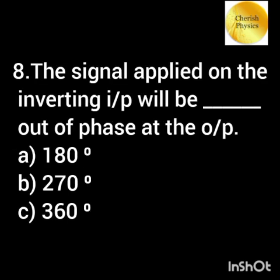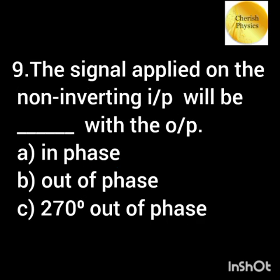The signal applied on the inverting input of an operational amplifier will be dash phase at the output. The signal applied on the non-inverting input of an operational amplifier will be dash with the output.